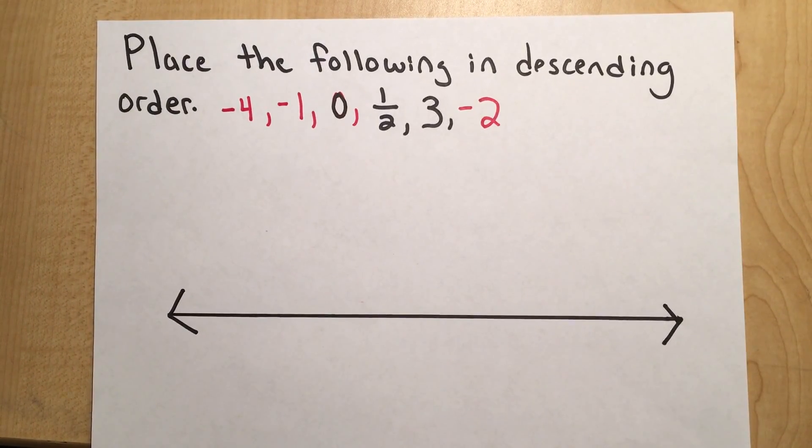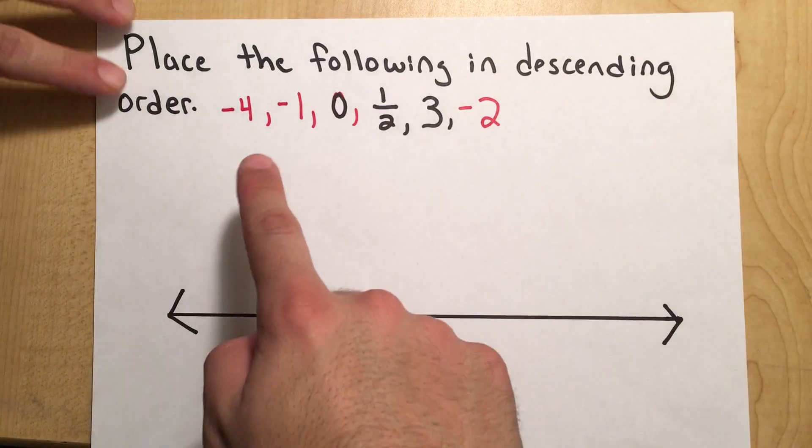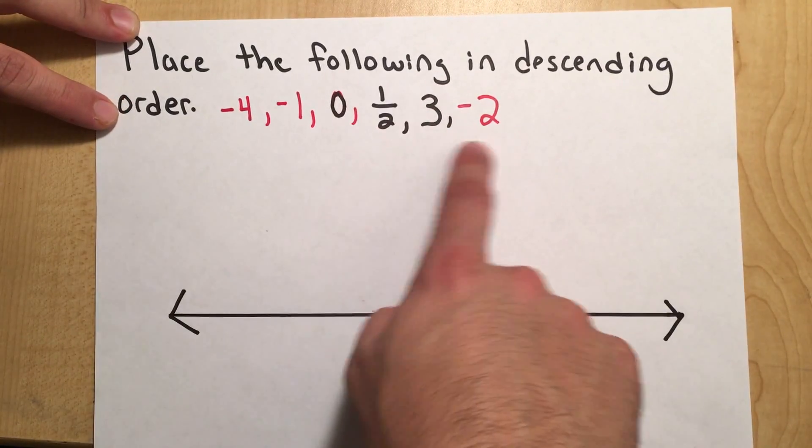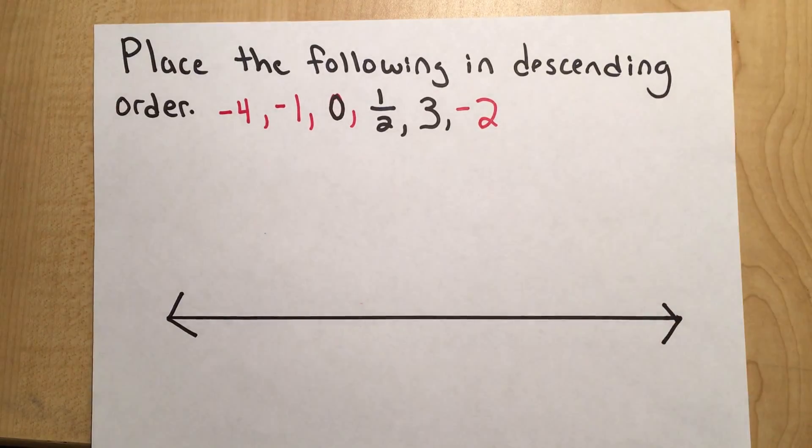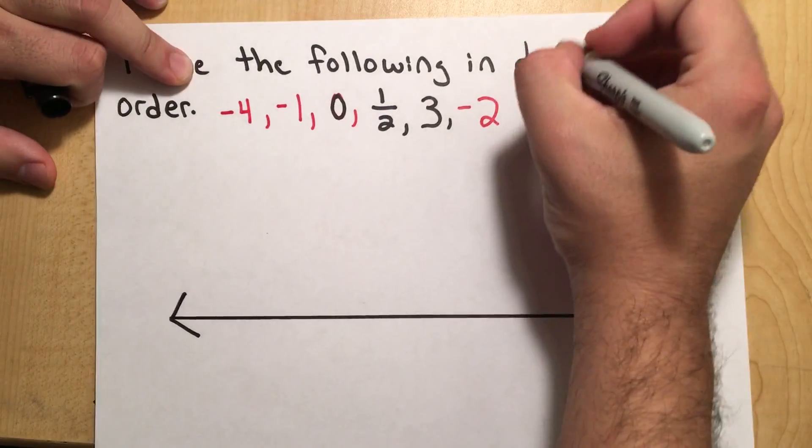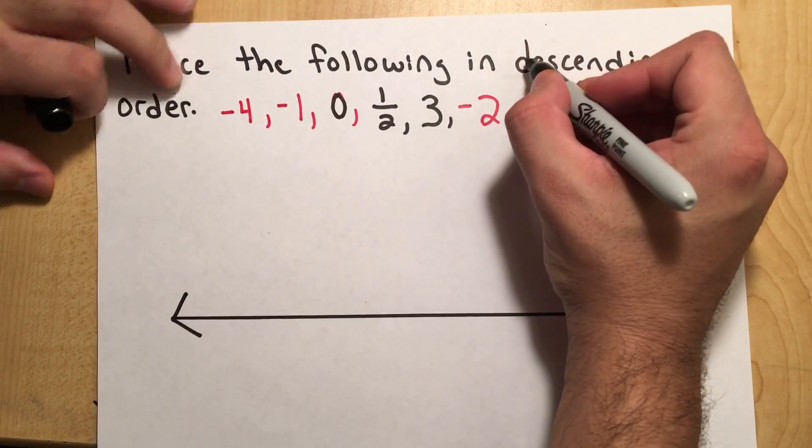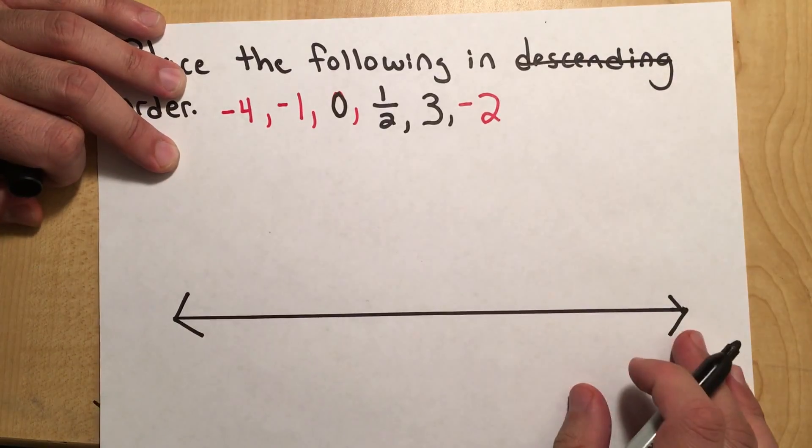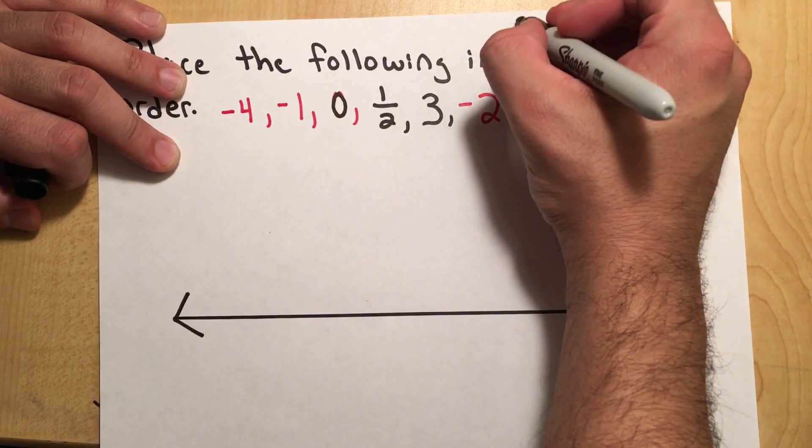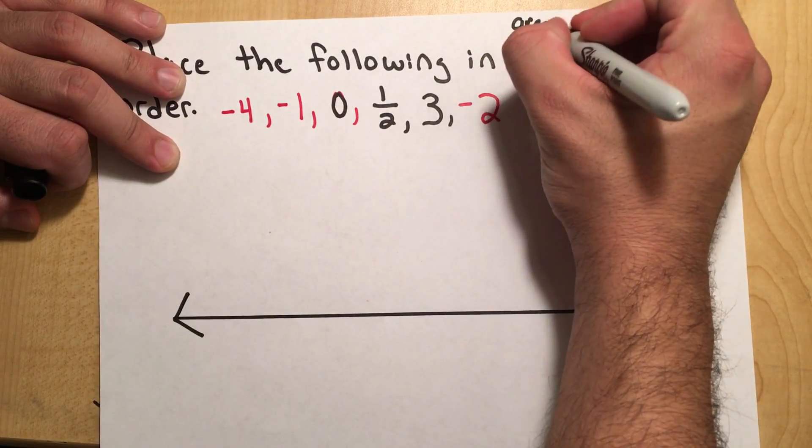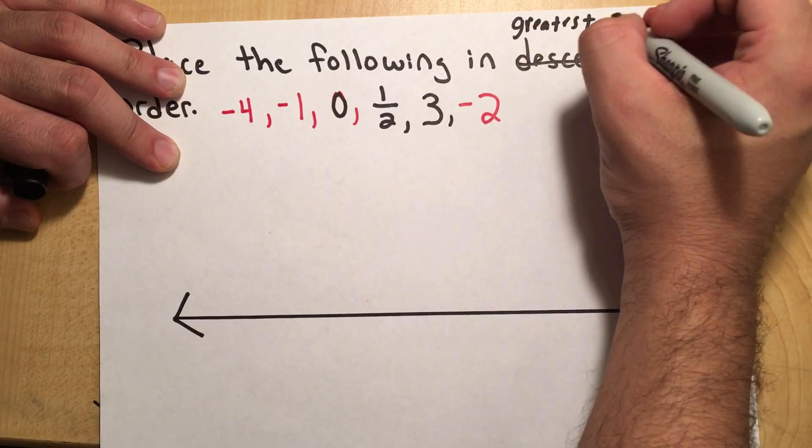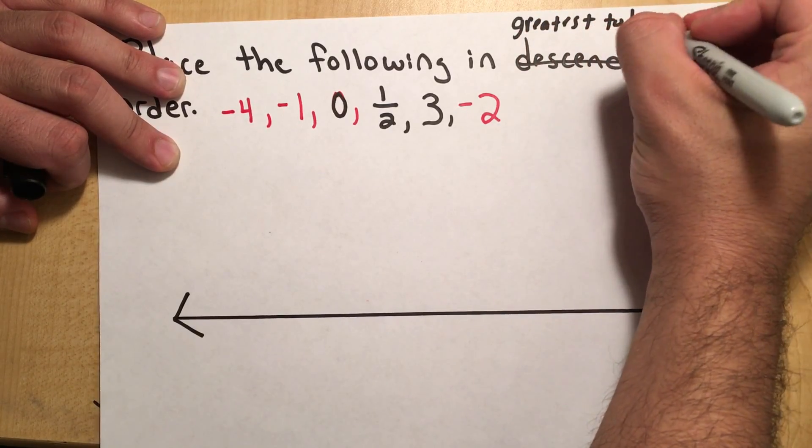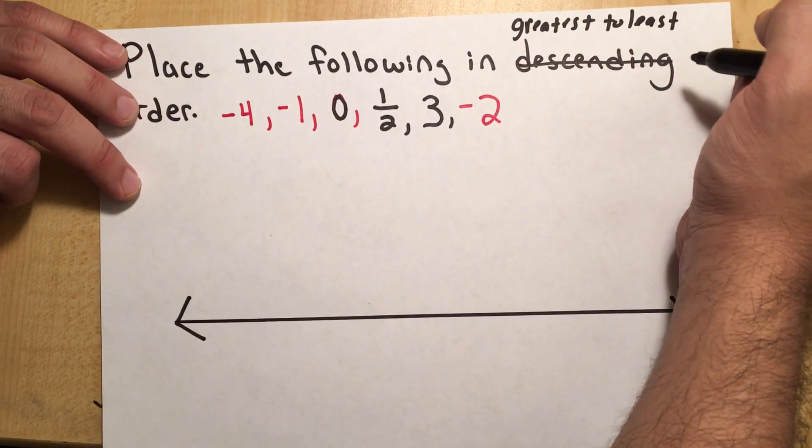We've been learning in these past few videos about the number line and we're being asked to put the following numbers in descending order. Descending means from greatest to least, or from the biggest number to the smallest.